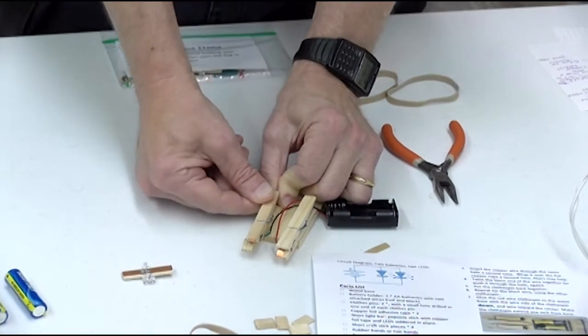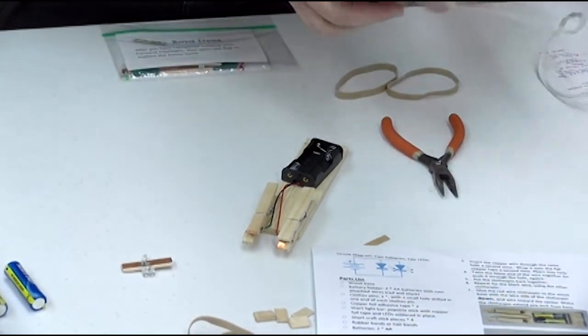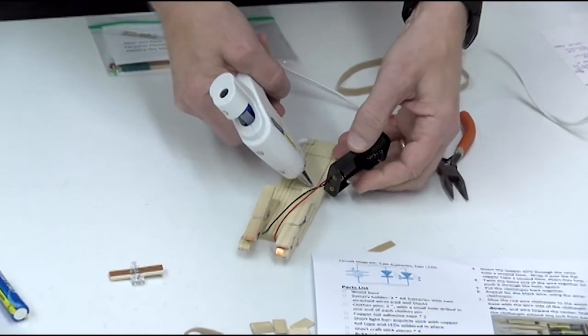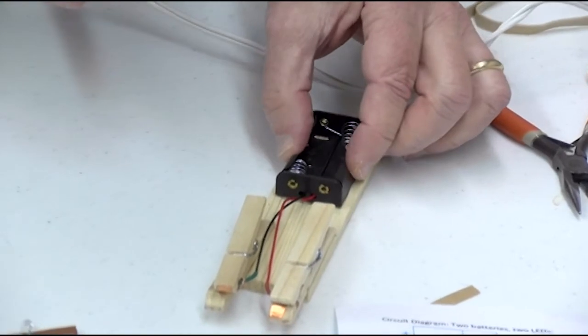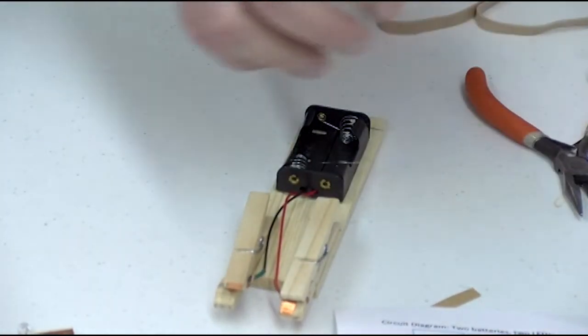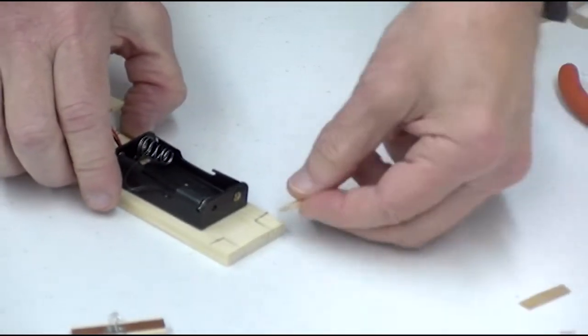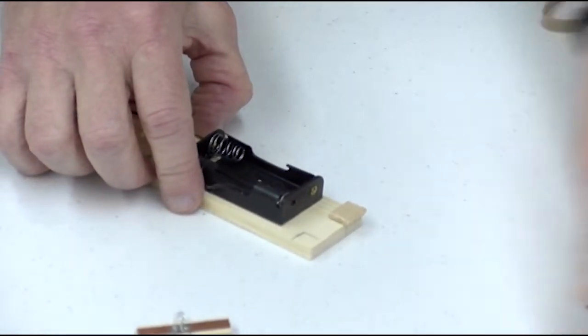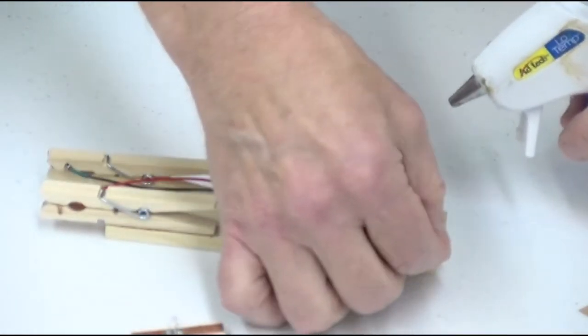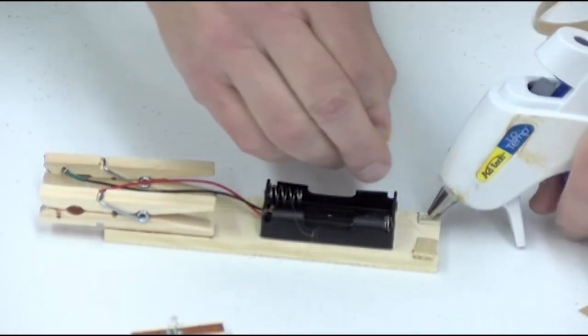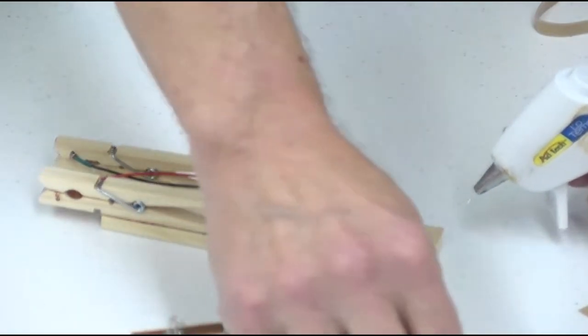This completes step eight so we're ready now for step nine which is to glue the battery holder in place. There is a rectangle on the wood base that is the location for the battery holder so put that in place and glue it down. And then step number ten is to glue the short craft sticks on the back end. So you should have four short craft sticks to be glued in place. Be very careful because squeeze out glue might be hot.